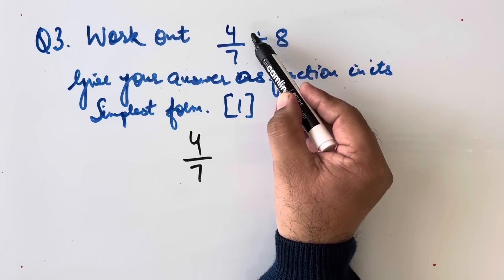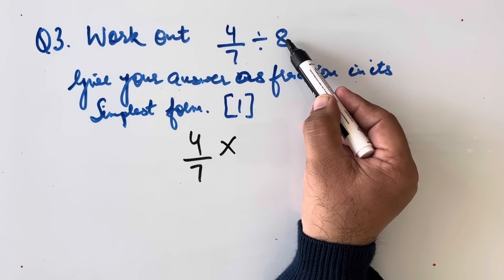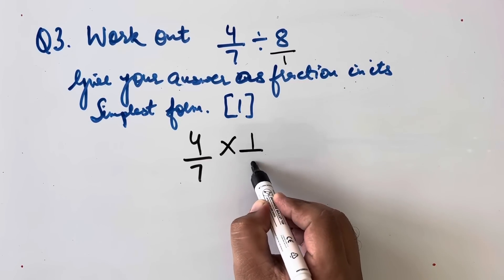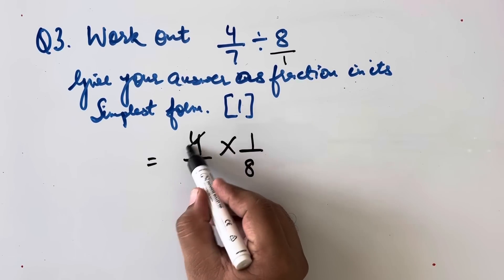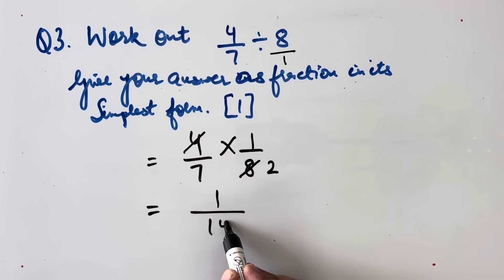Now this division sign will be converted into multiply. So we will be flipping 8. Here this is 8 upon 1, so we will be getting 1 upon 8. Now this cancels with 2. We get our answer 1 upon 14.